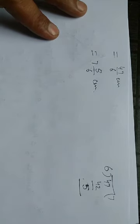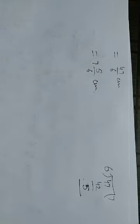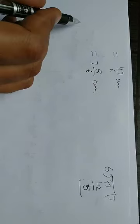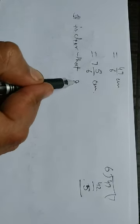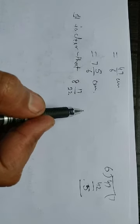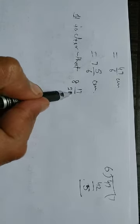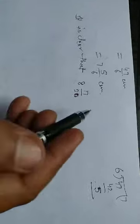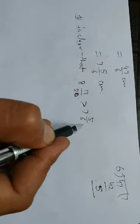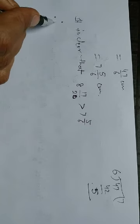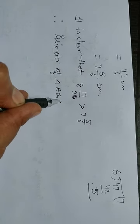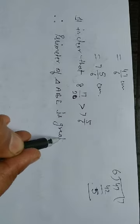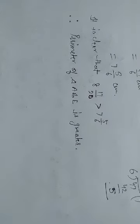Now which value is greater? 8 and 17/20 is greater than 7 and 5/6 cm. So it is clear that 8 and 17/20 is greater than 7 and 5/6 cm. Therefore, the perimeter of triangle ABE is greater.